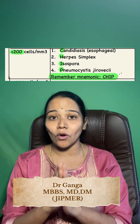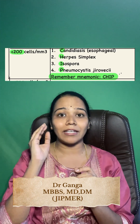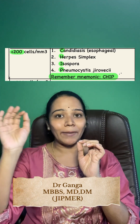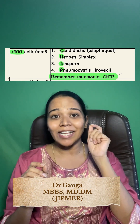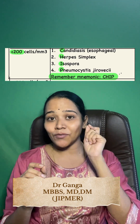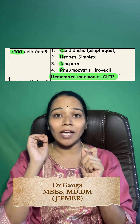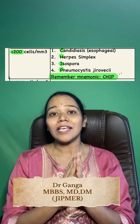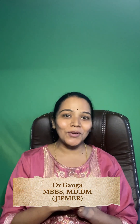If the CD4 count is less than 200, your diagnosis will be among four things — remember the mnemonic CHIP: C stands for Candidiasis (esophageal), H stands for Herpes simplex, I stands for Isospora, and P stands for Pneumocystis jirovecii pneumonia (PJP). This is how you can easily remember these associations.